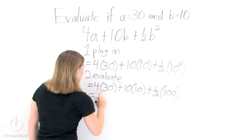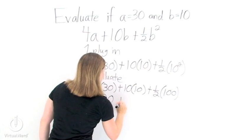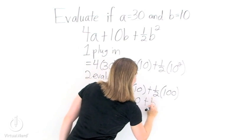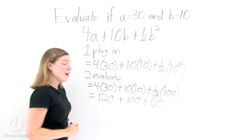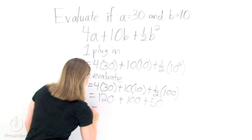Our second step will be to multiply straight across. So we have 120 plus 100 plus 50. Our last step will be to add everything together.